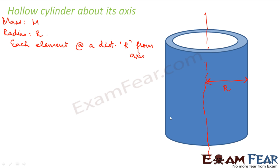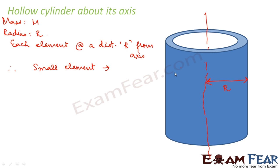Whatever elements are present, they are all present on the surface of the cylinder, and the axis passes through the center of the cylinder. So whatever element is present on the surface of the cylinder, everything will be at a distance r from the axis. So let us consider any small element dm on the surface of the cylinder.